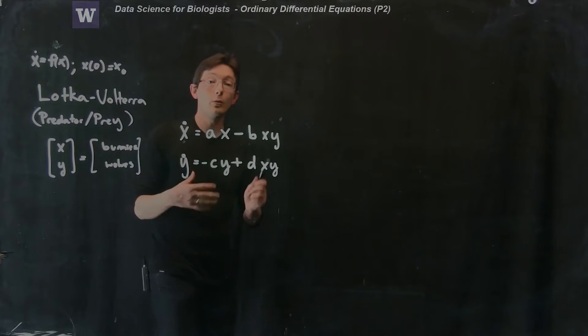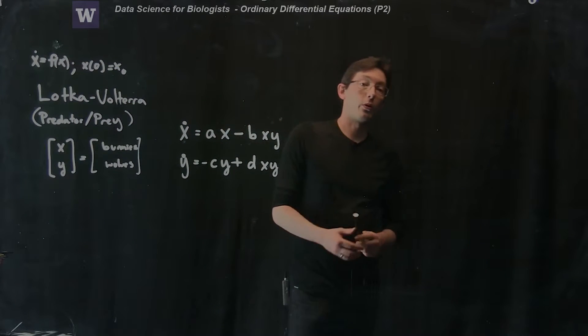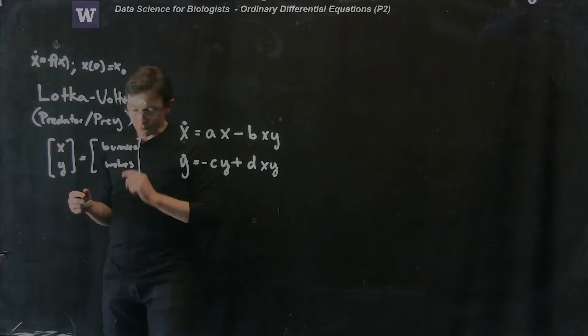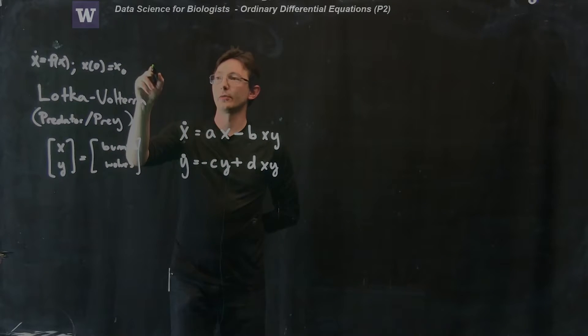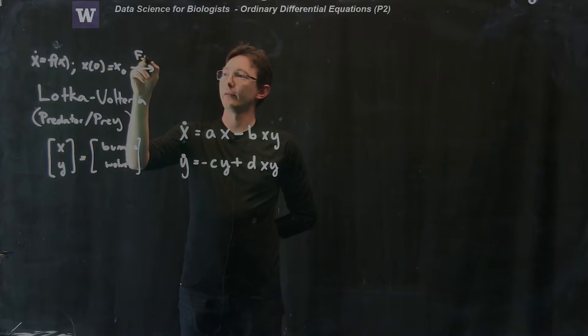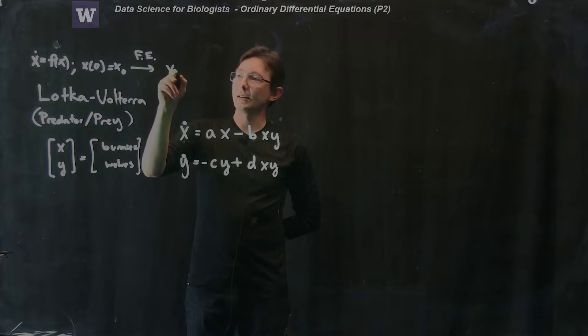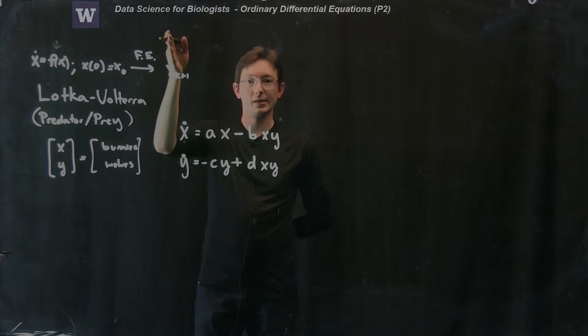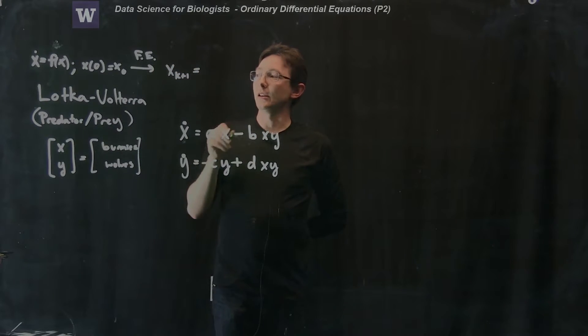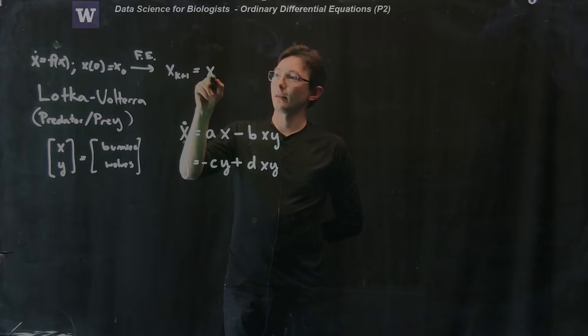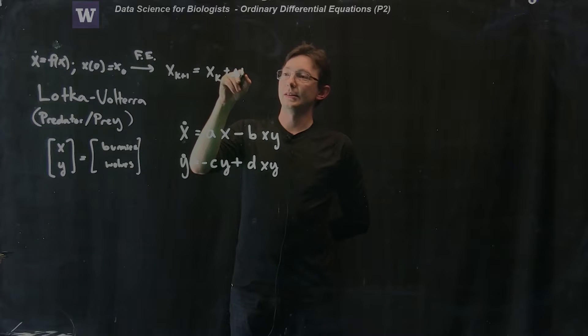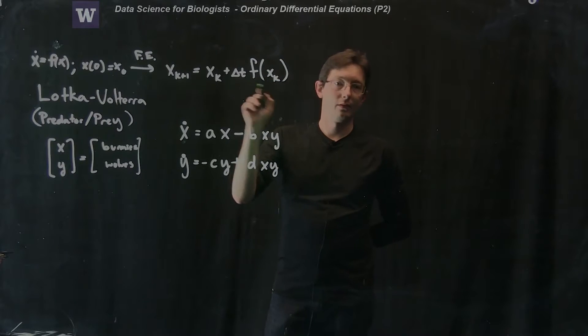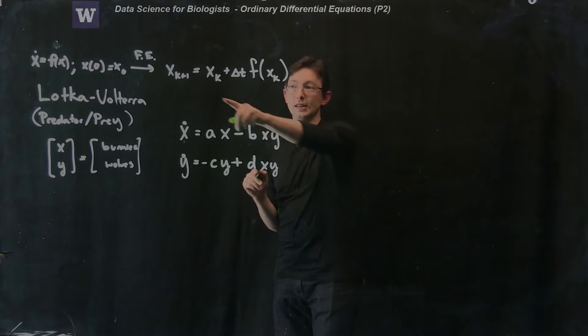We're going to write down our forward Euler integration scheme from before, and then in the next segment we're going to code it up. For forward Euler, we said that X at time k plus 1, this is my vector of all of the populations, this is a vector of my state, is equal to my vector at time k plus delta t times my right-hand side function evaluated at x of k. This is my forward Euler scheme.